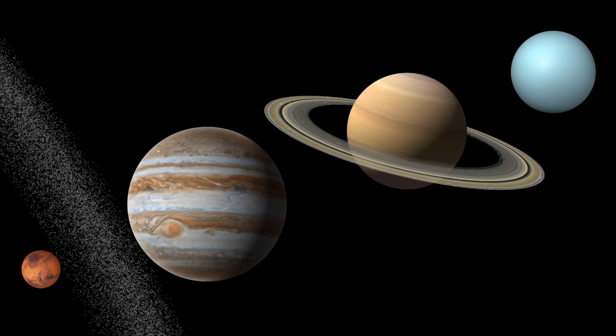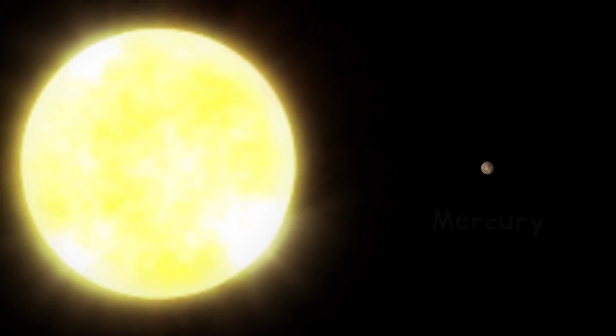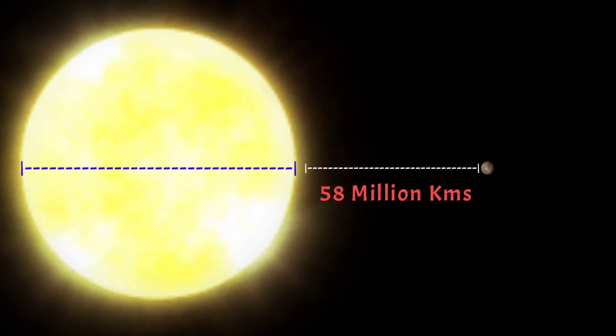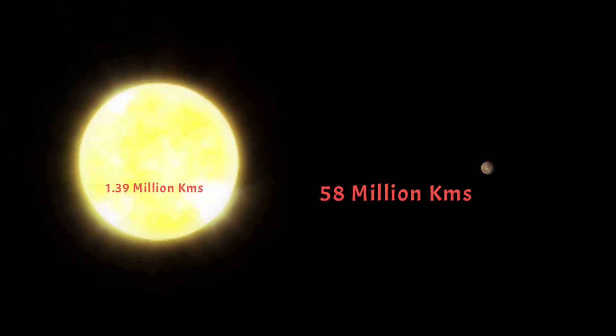Mercury is the closest planet to the Sun. Guess how far from the Sun it is? That's 58 million kilometers. To put that to perspective, the Sun's diameter is 1.39 million kilometers, so the Sun you see here should look smaller.